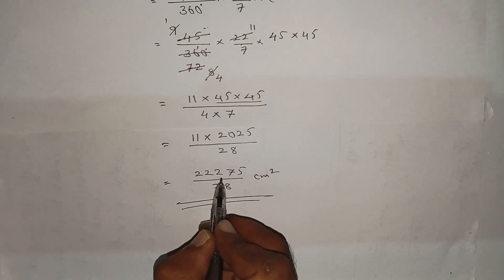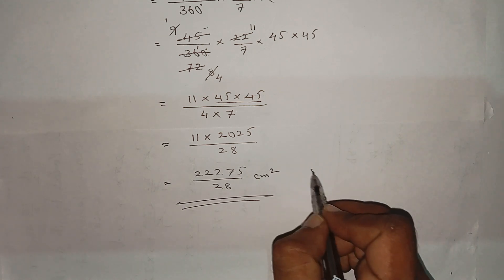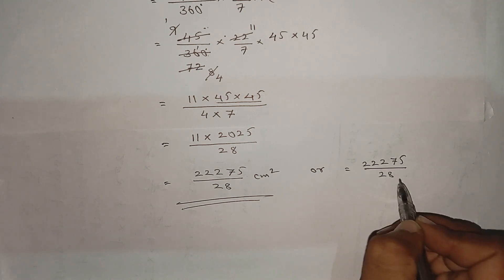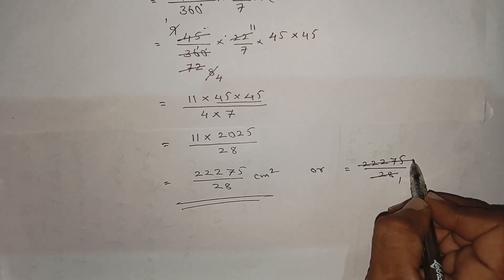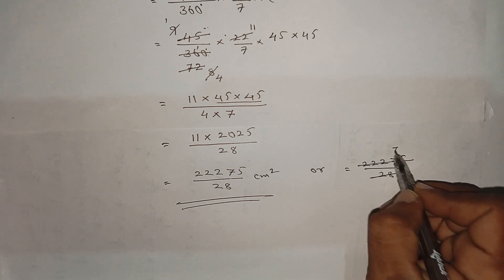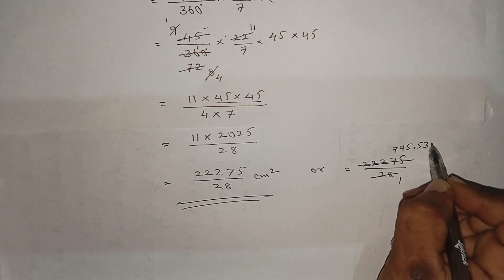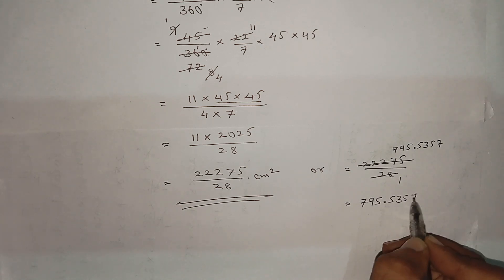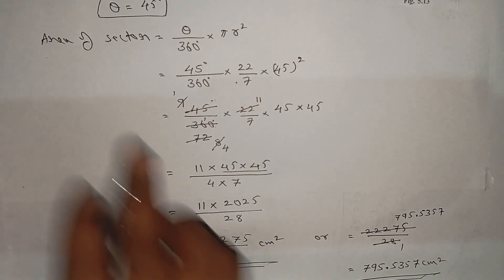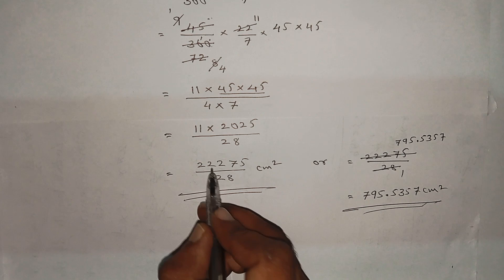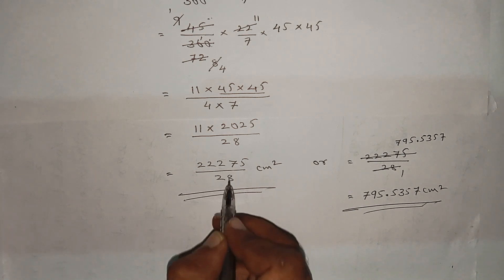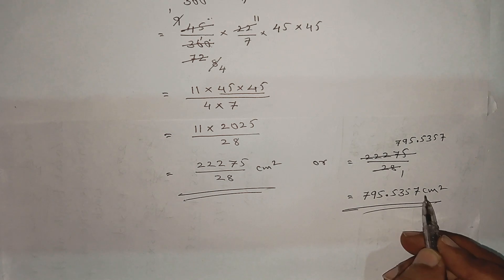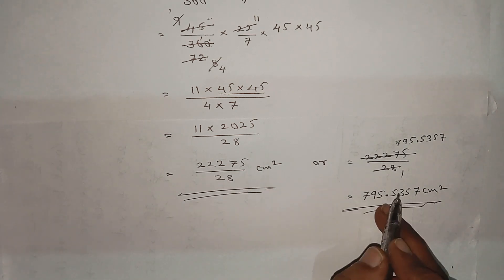Twenty-two thousand two hundred and seventy-five divided by twenty-eight centimeter square. Twenty-eight into the division gives seven hundred and ninety-five point five three five seven centimeter square. So the area of the sector is 22275 divided by 28, which equals approximately 795.54 centimeter square.